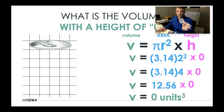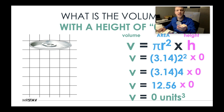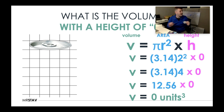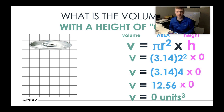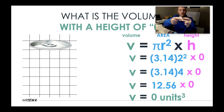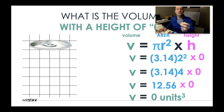Important note: area is units squared and volume is units cubed — to the power of three — because we have three dimensions: length, width, and height. So your answers for volume are always going to be in units cubed.